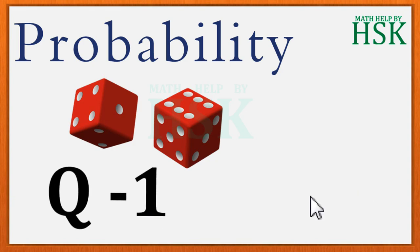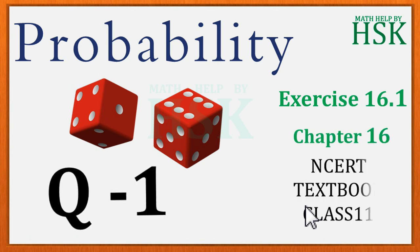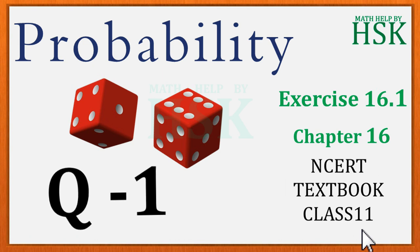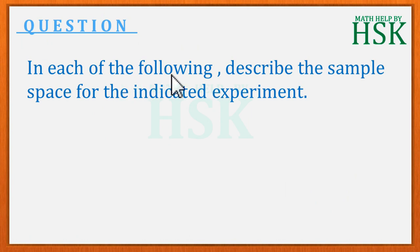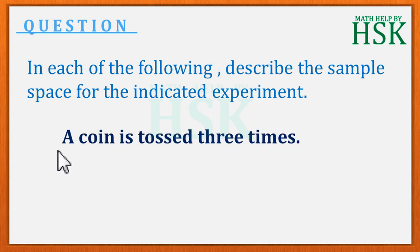Question Number 1 of Probability Exercise 16.1 of NCERT Maths Textbook. Hello friends. The question is: in each of the following, describe the sample space for the indicated experiment. The given experiment is: a coin is tossed three times, and for this experiment we have to calculate the sample space.